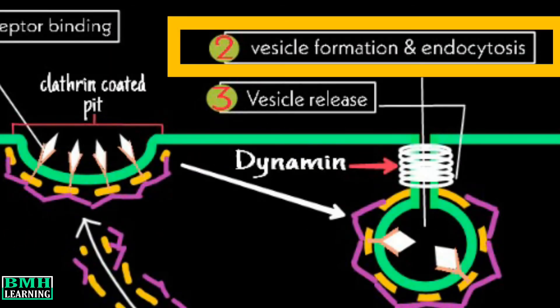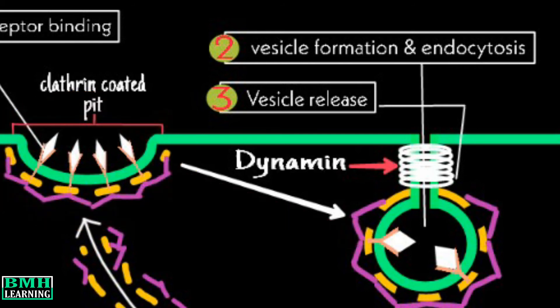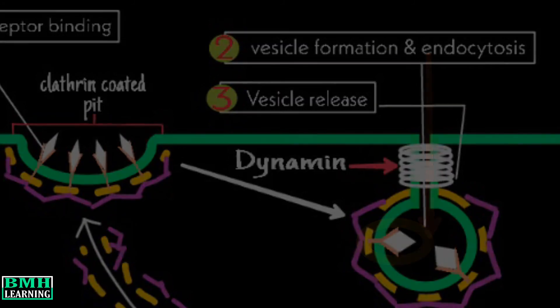The next step is vesicle formation and endocytosis. From this clathrin-coated pit, the bud starts to invaginate, and the complex of the ligand and the receptor is endocytosed.